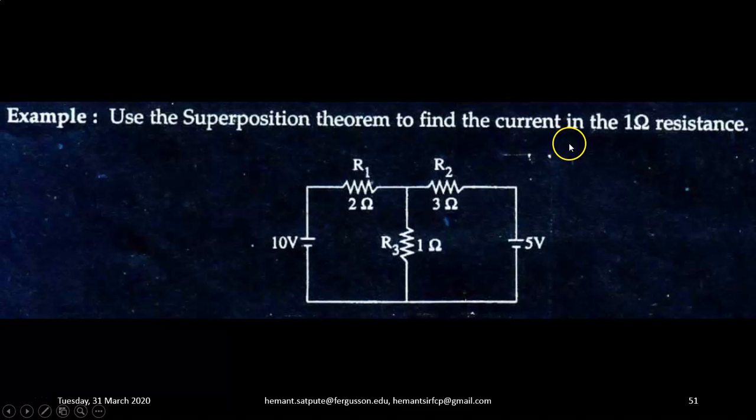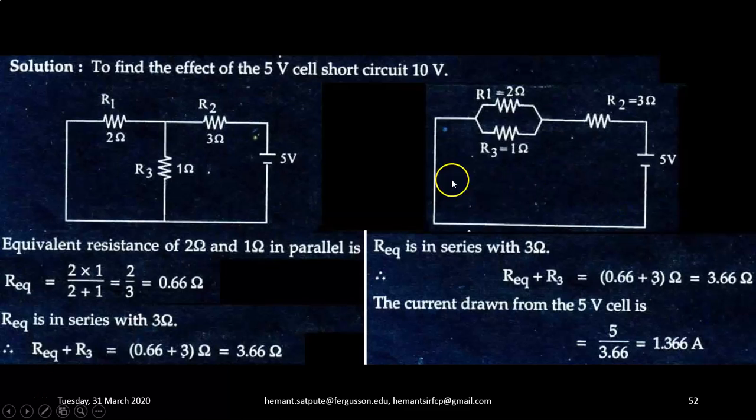Use superposition theorem to find current in one ohm resistor. So here, the circuit is given in which two voltage sources, one is of 10 volt, other is of 5 volt has been connected to a combination of resistors R1, R2, and R3. R1 is of 2 ohm, R2 is of 3 ohm, and R3 is 1 ohm. Now we need to find out the current flowing through the resistor R3. This is the problem. Let us start.